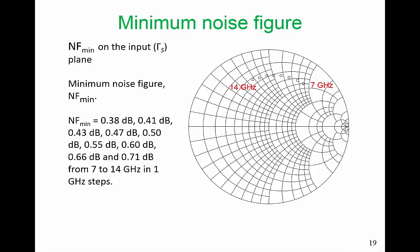Another set of data that enables us to do trade-offs is to look at NF-min on the gamma-S plane at a number of different frequencies. And here I've plotted NF-min from 7 GHz up to 14 GHz in 1 GHz steps. So we're trying to design from 8 to 12. So that's 8, 9, 10, 11, 12.